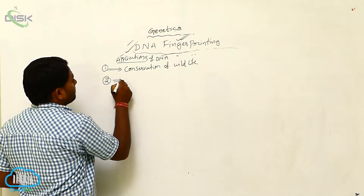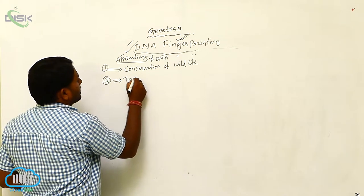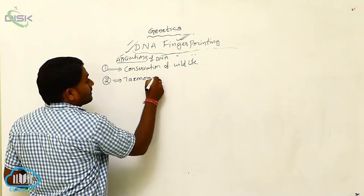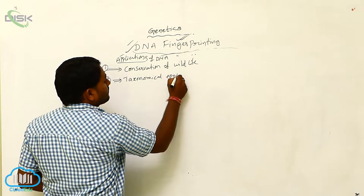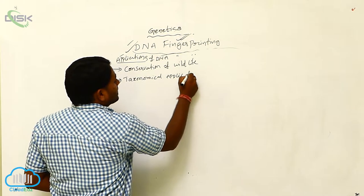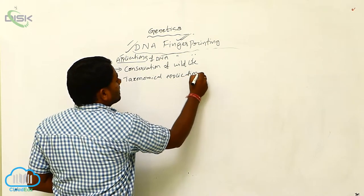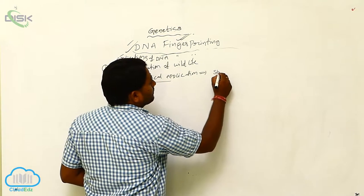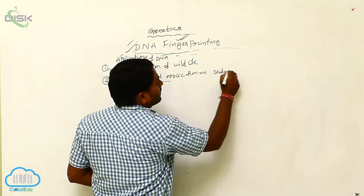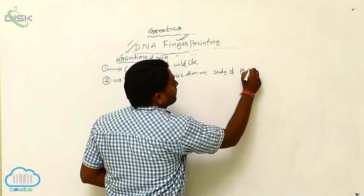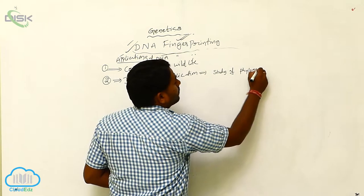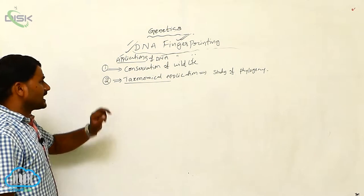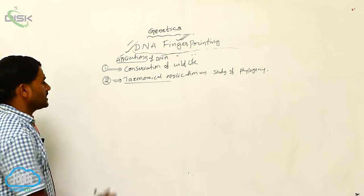The second application is taxonomical application. In the taxonomical application, DNA fingerprinting is used for the study of phylogeny. That is the taxonomical application.